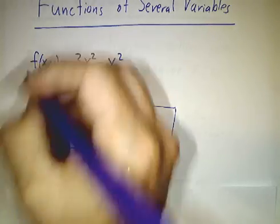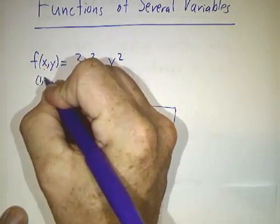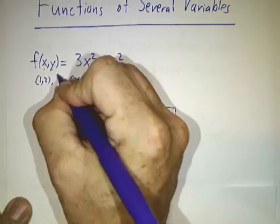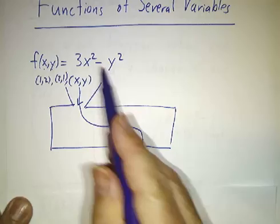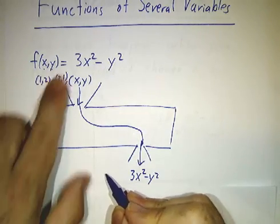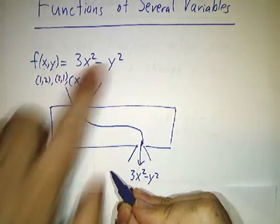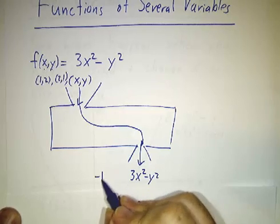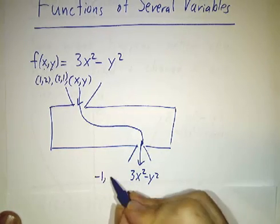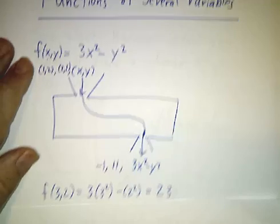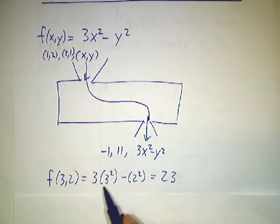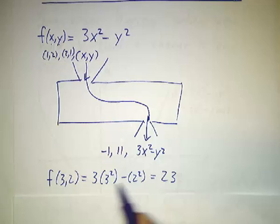So in our function machine, you might put an ordered pair (1,2) or you might put in (2,1) or you might put in (x,y). If you put in (1,2), you get out 3 times 1 squared is 3 minus 2 squared is 4, so that's negative 1. If you put in (2,1), you get 11. If you put in (x,y), you get 3x squared minus y squared. If you put in (3,2), you just say 3 times the first number squared minus the second number squared, you get 23.